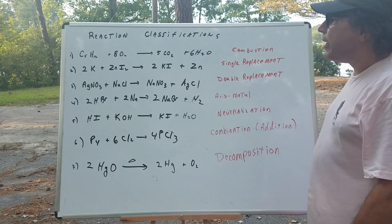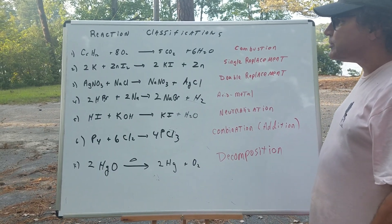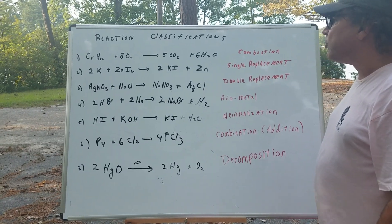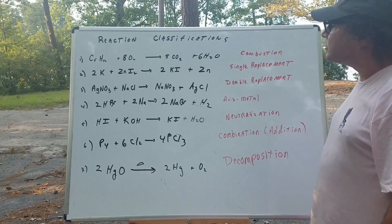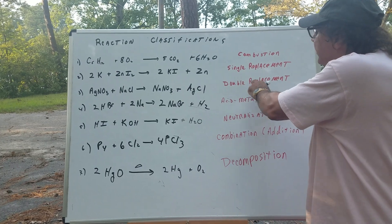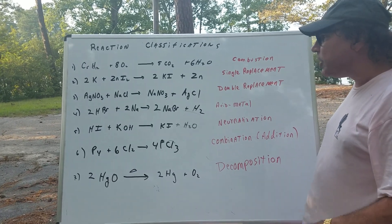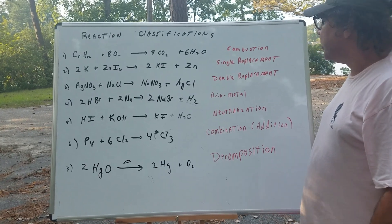Look at number three. This is known as a double replacement. Notice, we exchange partners. Silver nitrate and sodium chloride become sodium nitrate and silver chloride. This is a double replacement or a metathesis reaction. If you see the partner switch, it's double replacement.